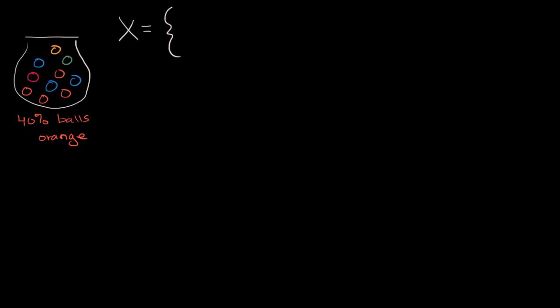And we're going to say that our random variable x is going to be equal to one if we pick an orange ball, and it's going to be equal to zero otherwise. You might already recognize this as a Bernoulli random variable. And we can construct a probability distribution for x. In fact, let's do this.